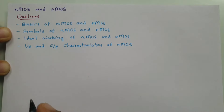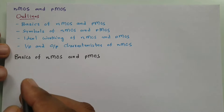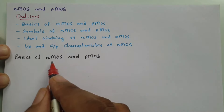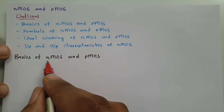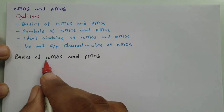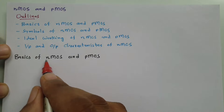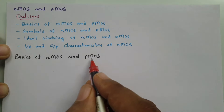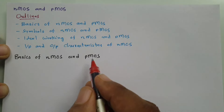Let us begin with the first agenda: basics of NMOS and PMOS. As per the name, NMOS means the channel will be of electrons — N stands for electrons. So in NMOS, there will be a channel of electrons for its operation. And in PMOS, the channel will be of holes — P stands for holes. So in PMOS, there will be a channel of holes.